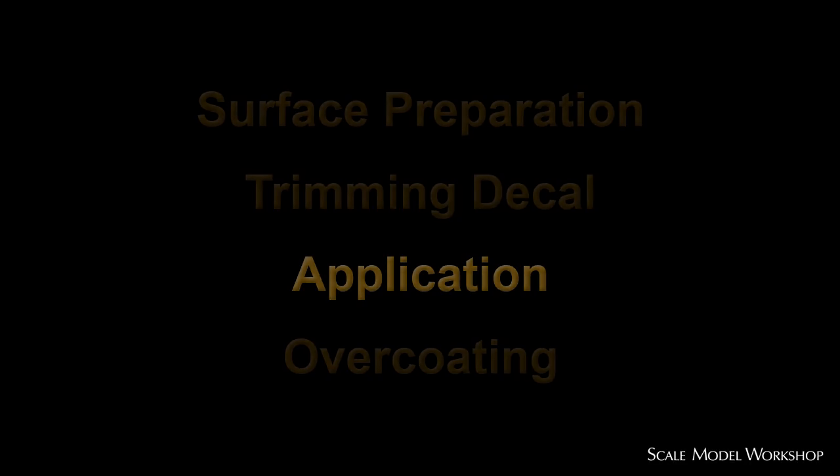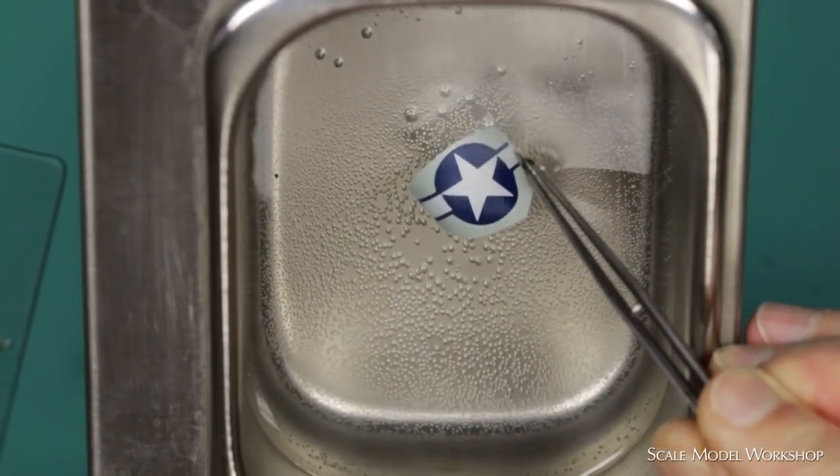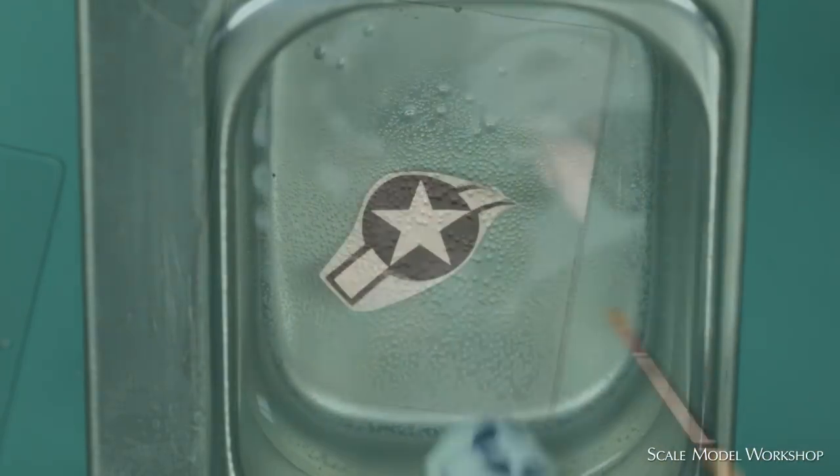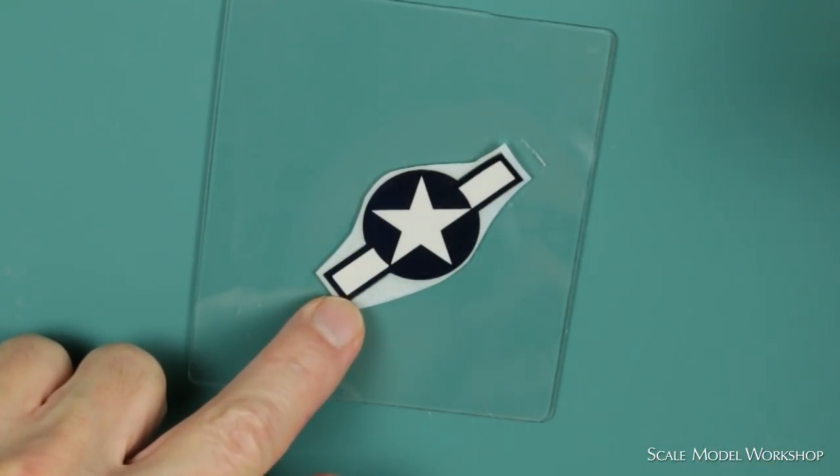Application begins by wetting the decal. Note that I hold on to the decal. The decal stays in the water only long enough to curl and then begin relaxing. Once the decal is wet, it's transferred to the glass plate.